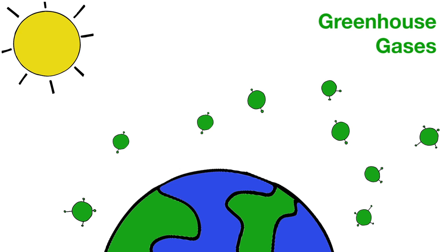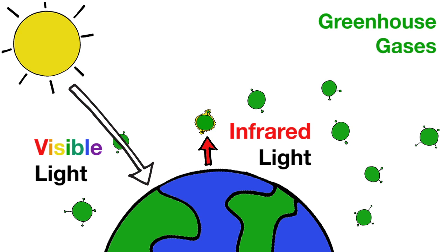Greenhouse gases in the atmosphere, such as methane and carbon dioxide, let visible light pass through but absorb infrared light, causing the atmosphere to retain heat. This energy can be absorbed and emitted by the atmosphere many times before it eventually returns to outer space. The added time this energy hangs around has helped keep earth warm enough to support life as we know it.